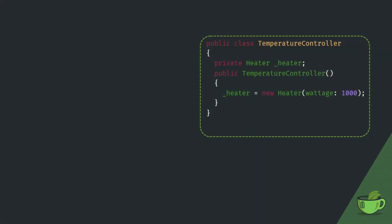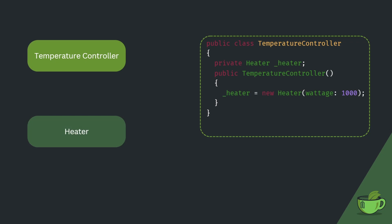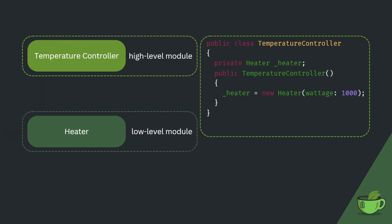Today's example will be a strongly simplified version of a temperature controller. This controller creates an instance of a heater and stores it as a member. Throughout this lecture, we will take a very close look at the relation between these two classes and how modifying this relation can improve modularity of our code. In our example, the temperature controller represents a high-level module, while the heater acts as a low-level module. Note that modules could also be called components or services.